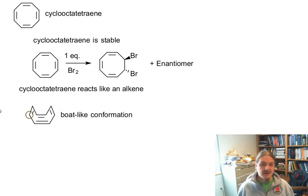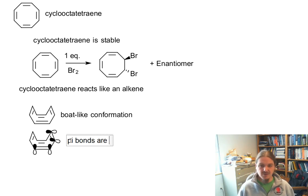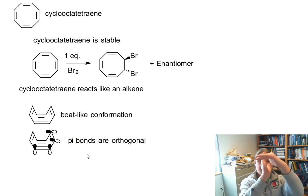What this boat-like conformation means is that the p orbitals on the individual alkenes aren't lining up with each other. So the pi bonds are what we would call orthogonal, meaning that they don't overlap. So orthogonal is like an extension of perpendicular.